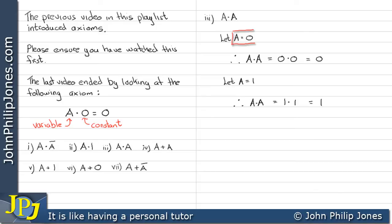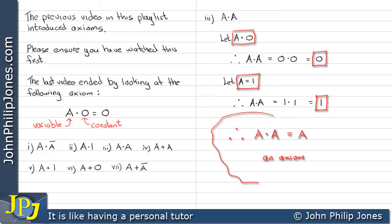We can see that when A was zero the result was zero, and when A was one the result was one. Therefore we can conclude that A AND A will always give us A, and this is another example of an axiom.